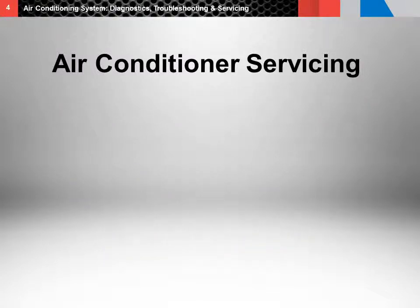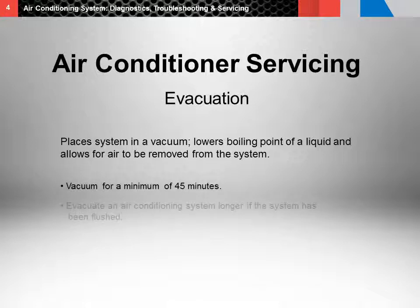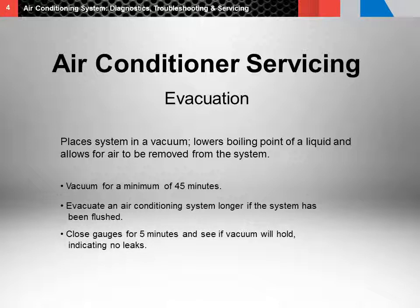Here are some common servicing procedures. First is air conditioner evacuation. This places the system in a vacuum, which lowers the boiling point of a liquid and allows for air to be removed from the system. If moisture is not removed from the system, it can freeze and cause blockage, dilute lubricants, and can even create acids when mixed with refrigerants. Be sure to vacuum for a minimum of 45 minutes, and evacuate longer if the system has been flushed. Once the system has reached the desired vacuum reading, close the gauges for five minutes and see if the vacuum will hold, indicating no leaks. A rise in vacuum within five minutes is an indicator of a leak in the system.